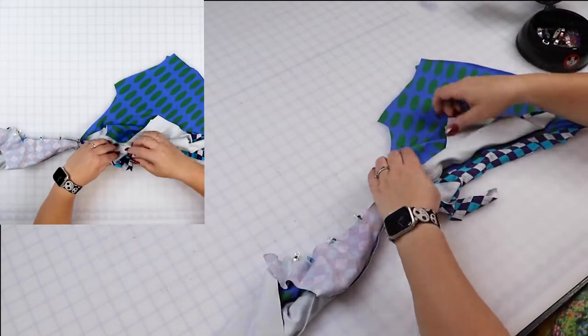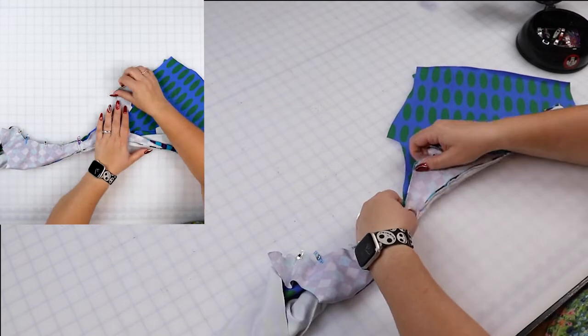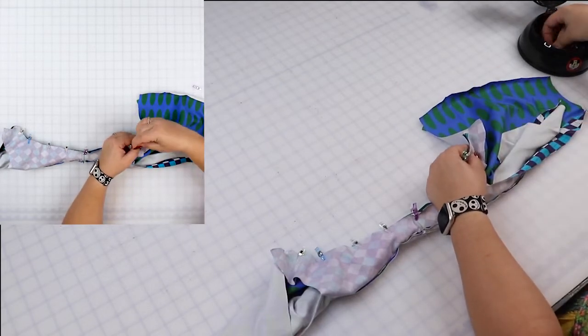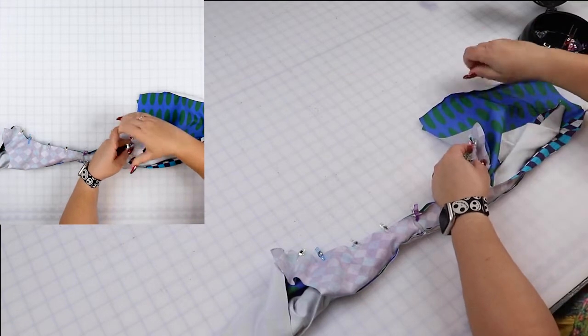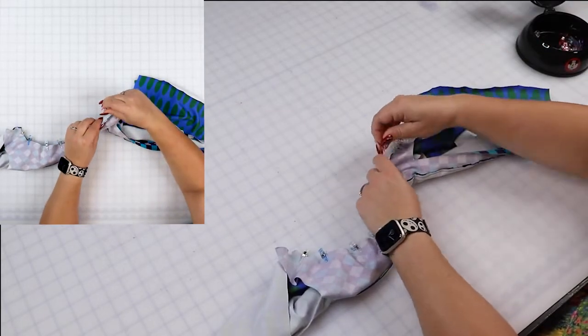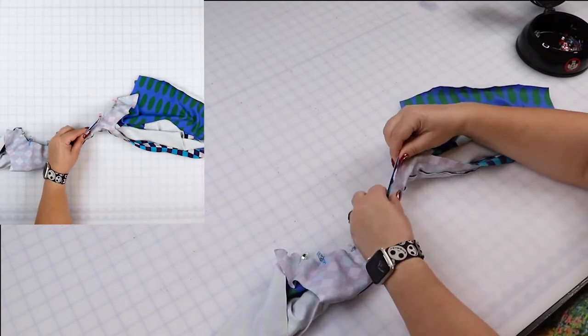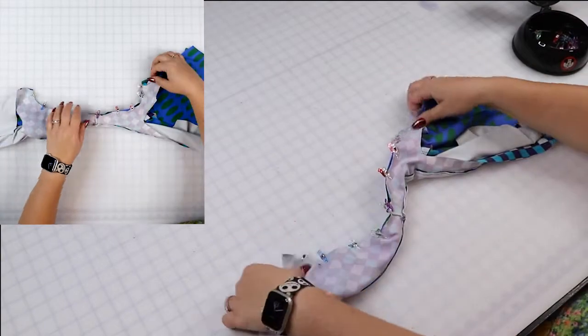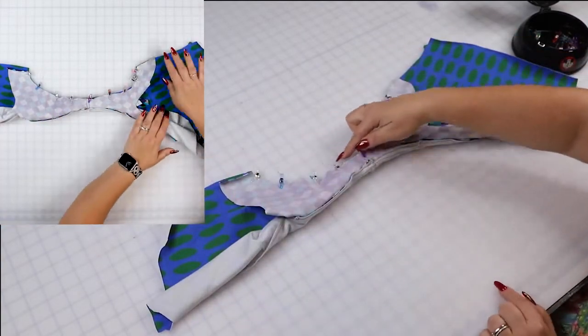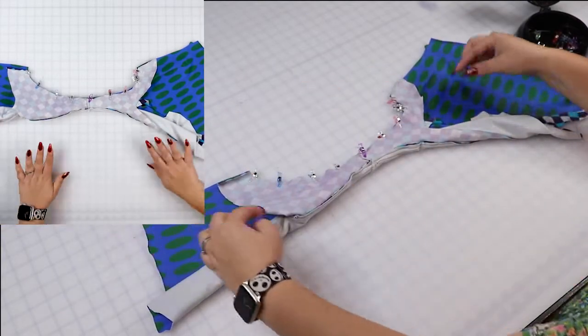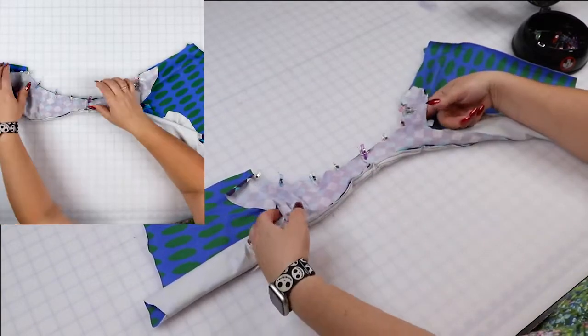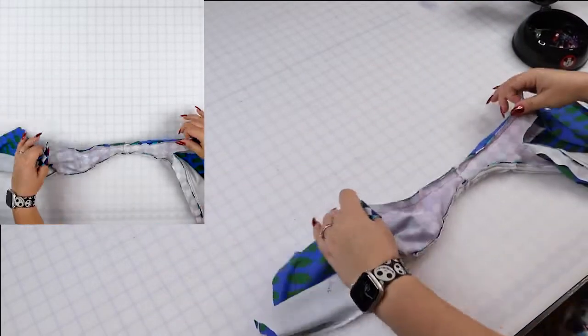So let's go ahead and do the same thing on this side. I'm going to make sure there is just two layers of fabric here. Okay, so this is what it will look like before we stitch it. This is the arm opening, this is the side seam, and this is the other side of the bodice rolled in here. So we're going to stitch around here, making sure that none of the burrito is caught in the stitching.